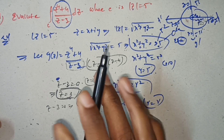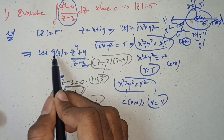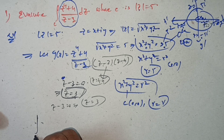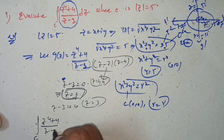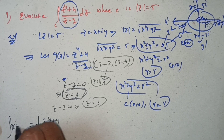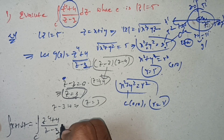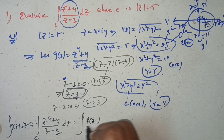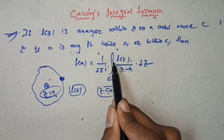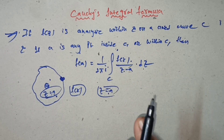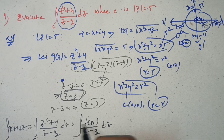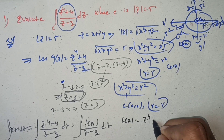Now, from the integral we assume f(z) = z⁴ + 4 — this is a polynomial function, so it is an analytic function. And z − 3 corresponds to z − a, where a = 3, which lies inside curve C.